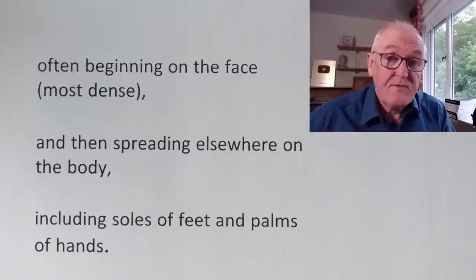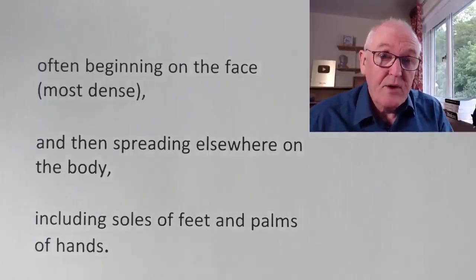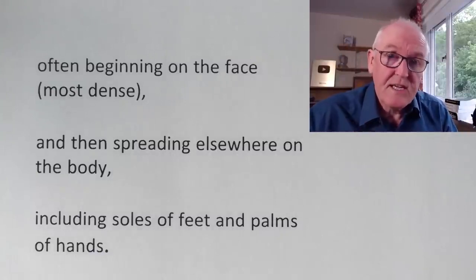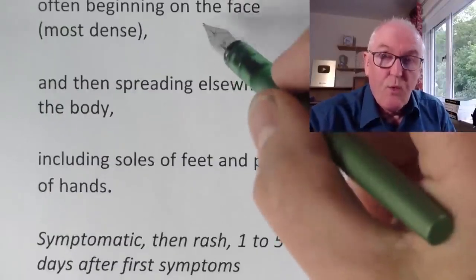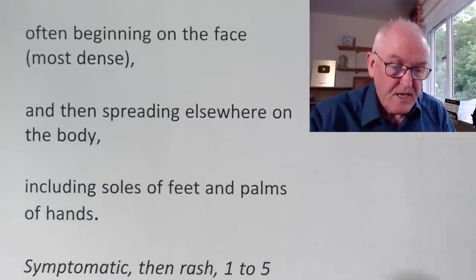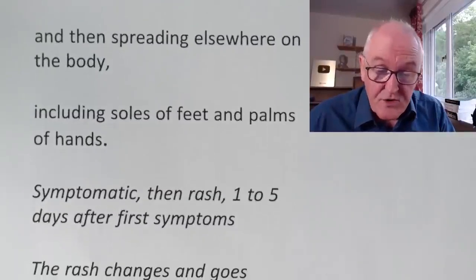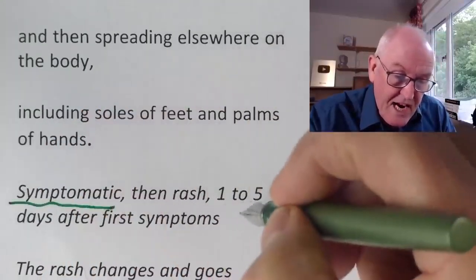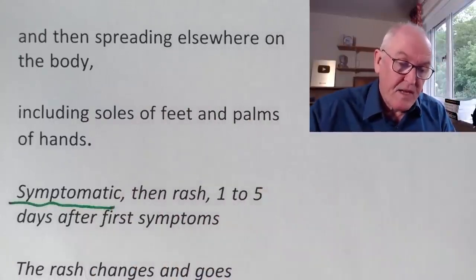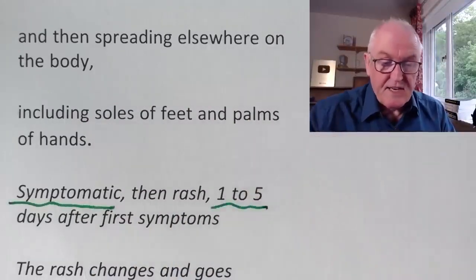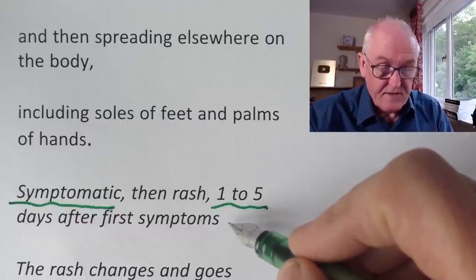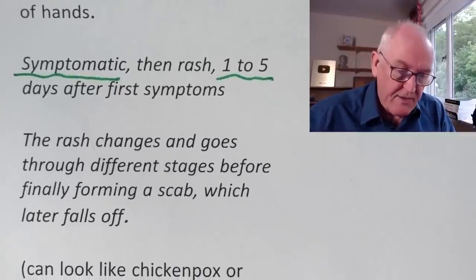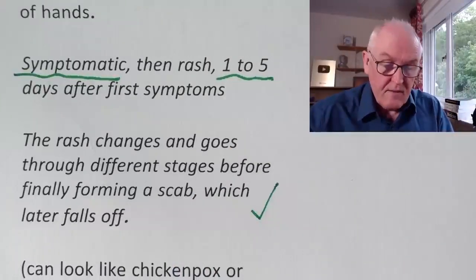This rash often begins on the face, but in some recent cases the rash began where the disease was transmitted — through sexual activity in some cases. Generally it starts on the face where it's more dense, with many pustular spots, then spreads to other parts of the body including the soles of the feet and palms of the hands. The rash appears one to five days after the first symptom — typically two to three days after the patient first starts feeling unwell — and goes through different stages before finally forming a scab which later falls off.